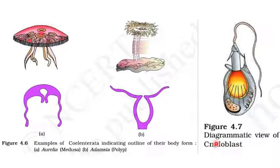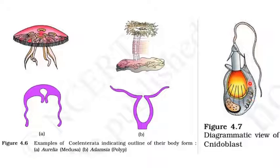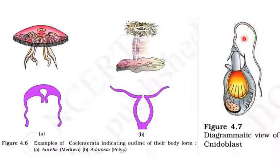This is a diagram of a nematoblast — the stinging cell. It contains a nidocyst with a spine-like structure. When triggered, it injects the toxin called hypnotoxin into the prey, paralyzing it.